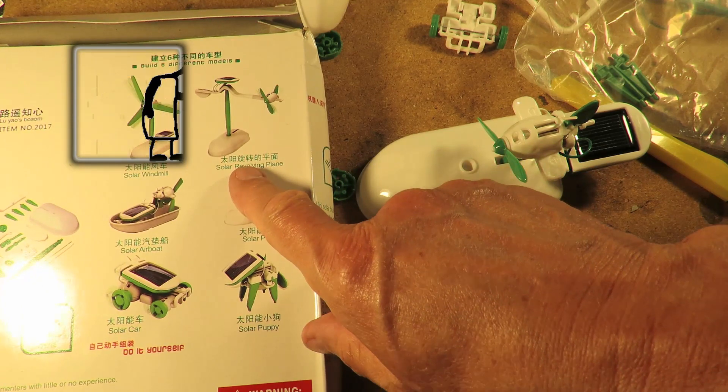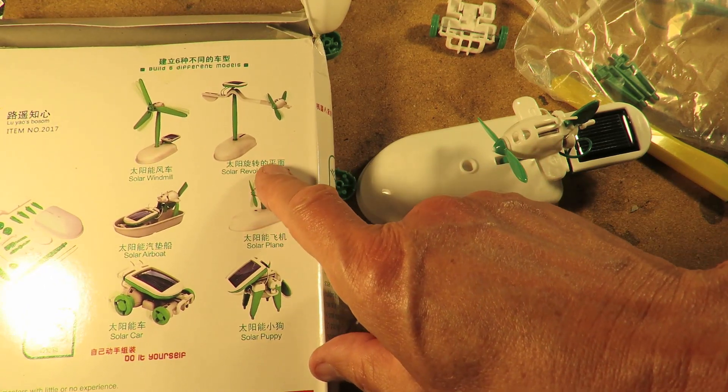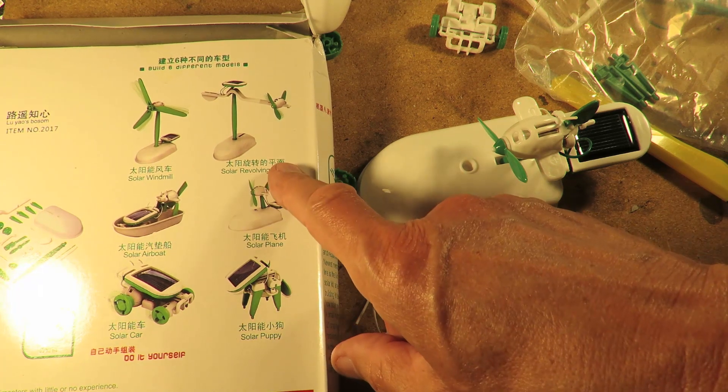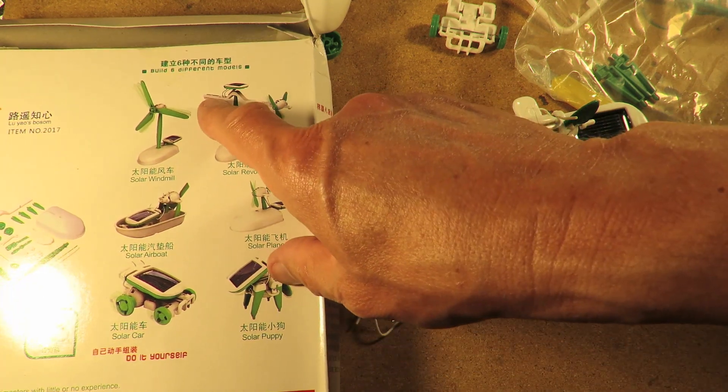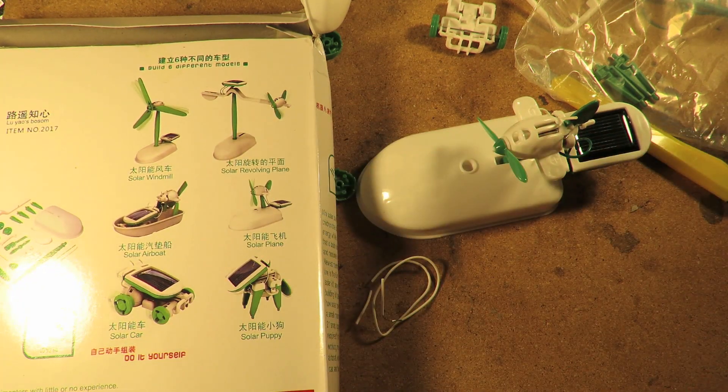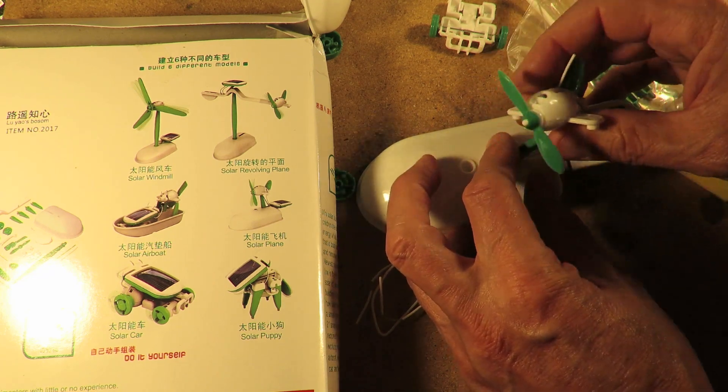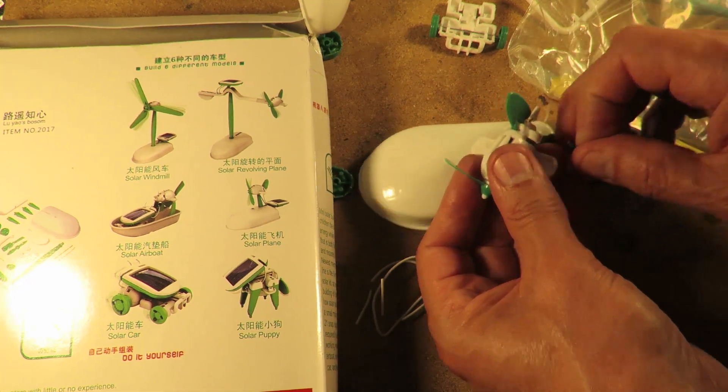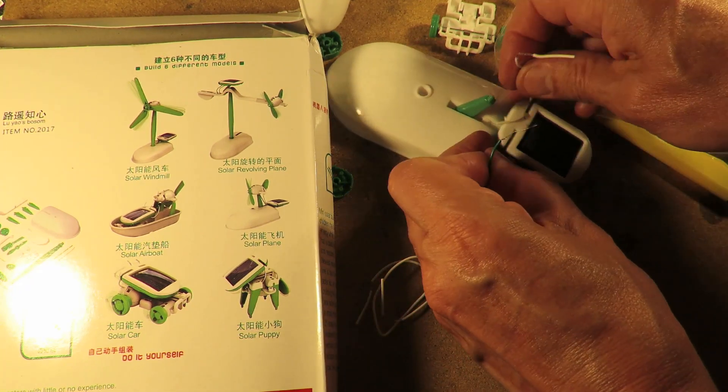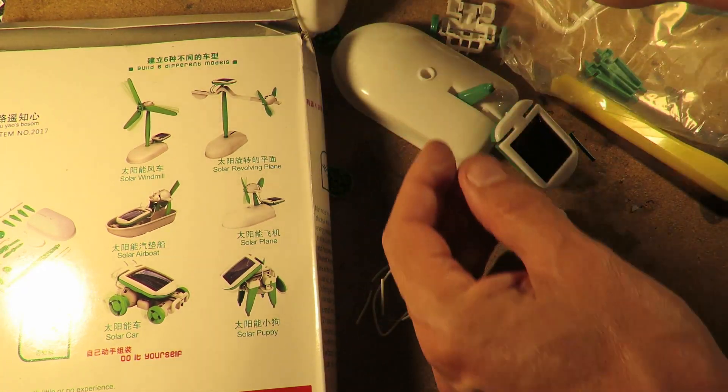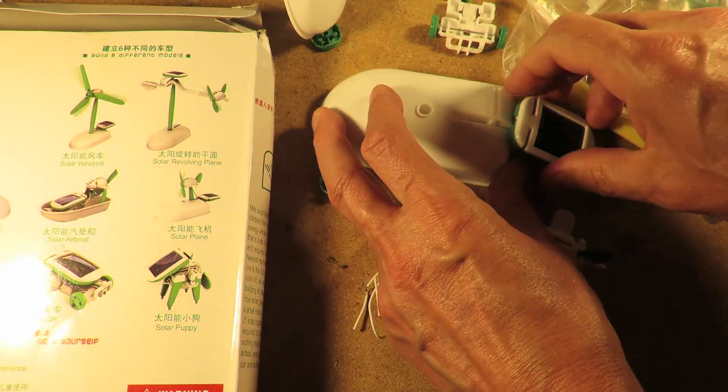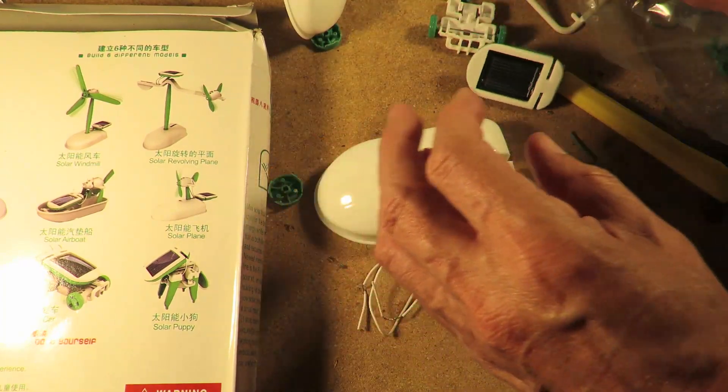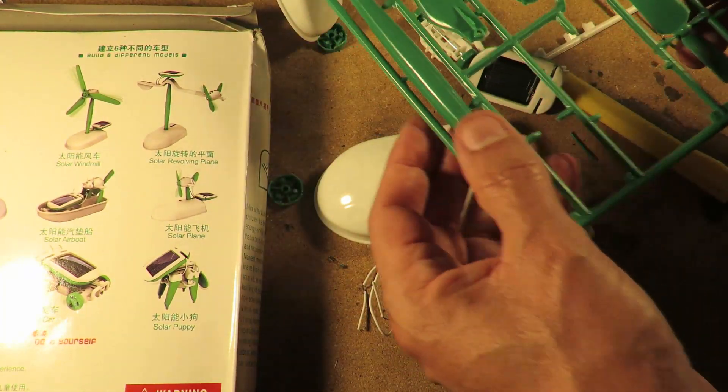Right, we'll make this thing, the solar revolving plane. Yes, I remember doing this one before. You have to put some coins in it to balance it. So we need this fella again, but we're going to need the long wires. So we do need to disconnect it.